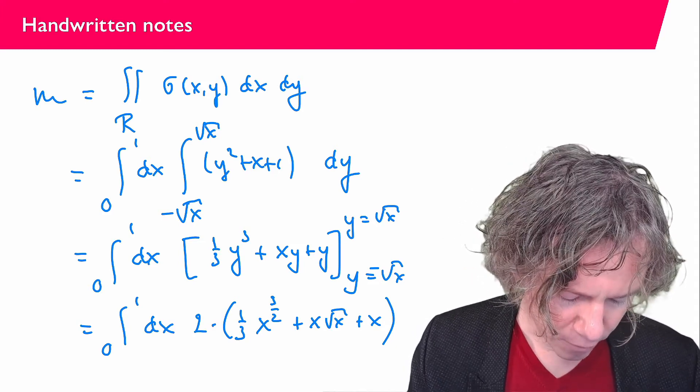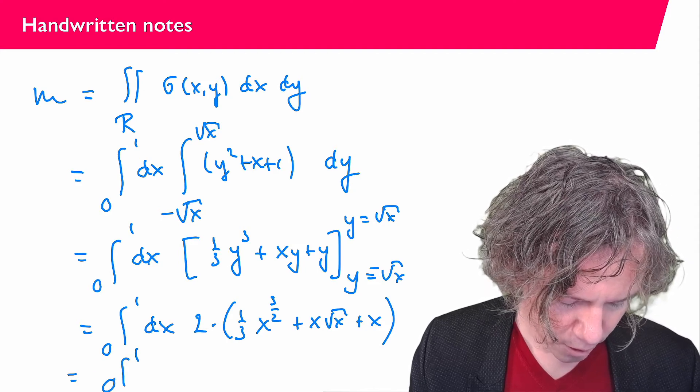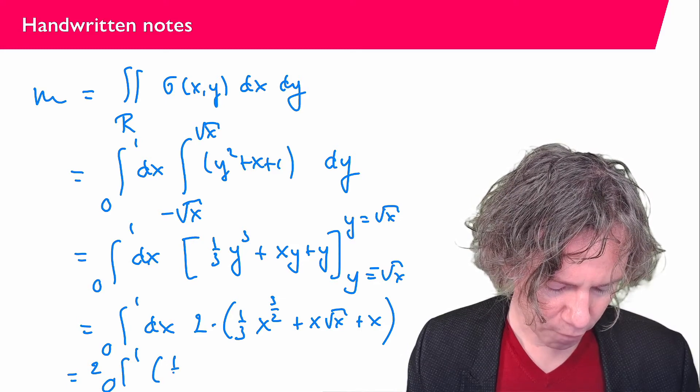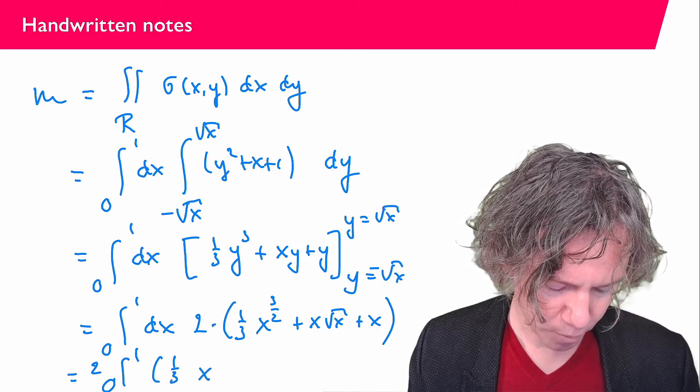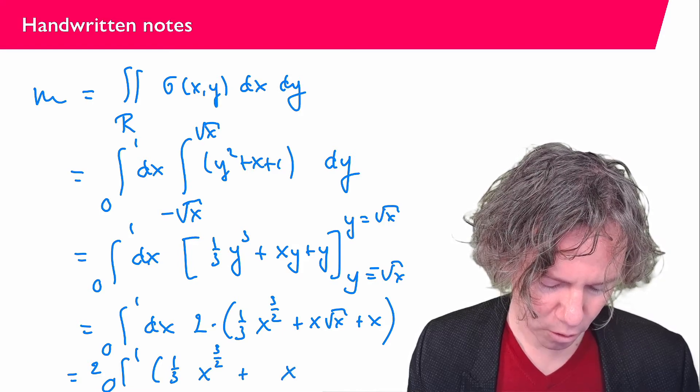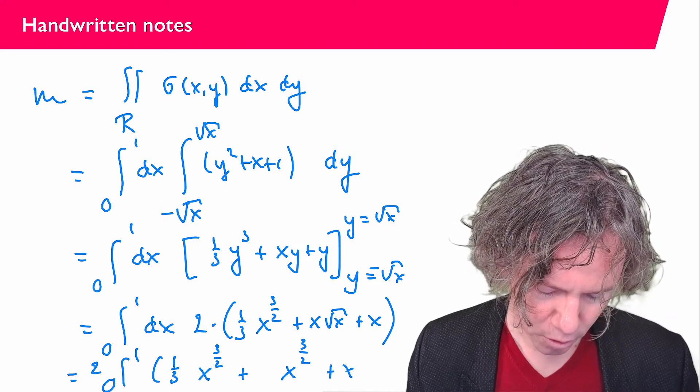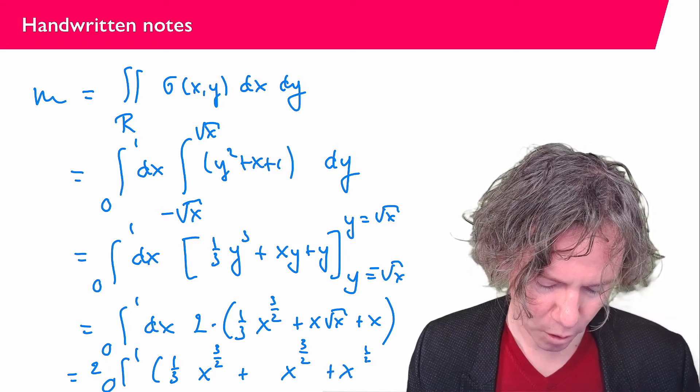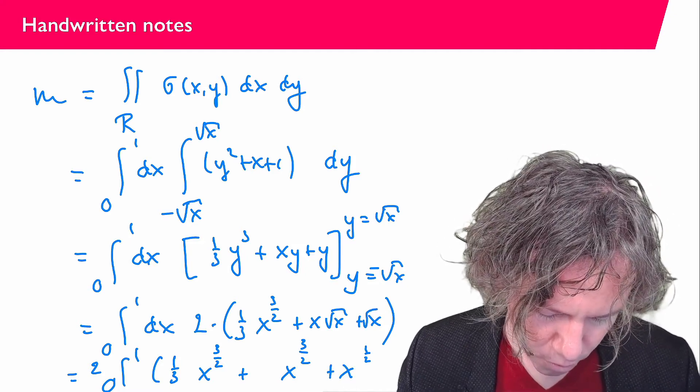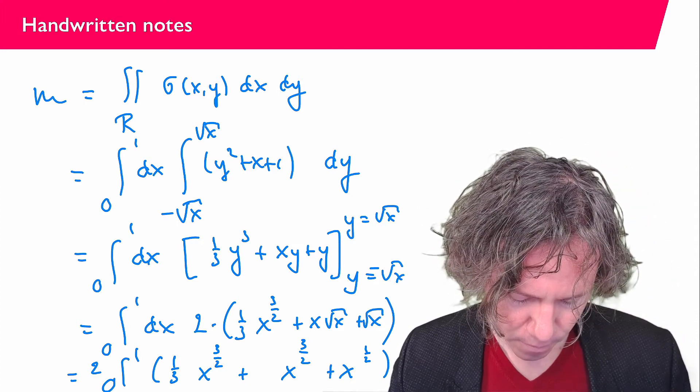So what I have found up till now is the integral from 0 to 1. Let's write a 2 in front of it. And then I have 1 over 3 x to the power of 3 over 2 plus this is x times square root of x is also x to the power of 3 over 2. I made a little... This should be square root of x. Sorry about that. x to the power of 1 half dx.